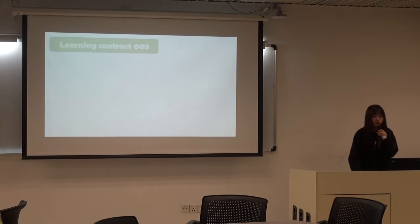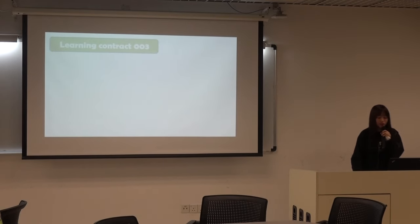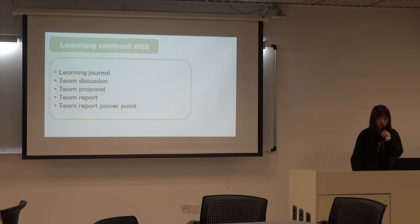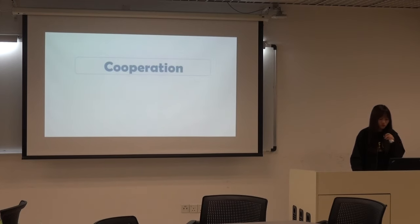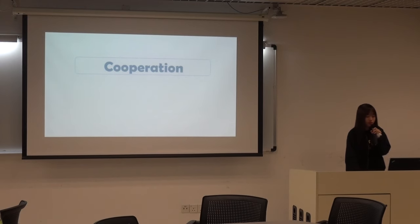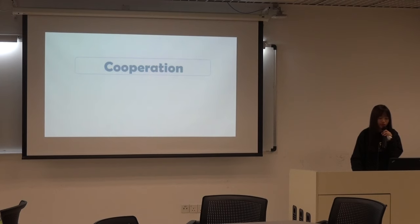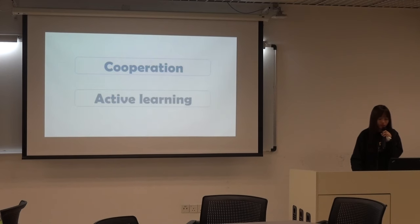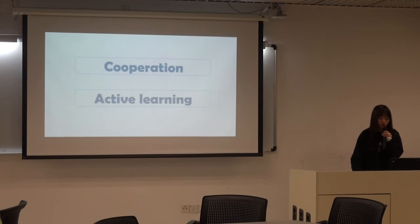In Learning Contract 3, I needed to work with my team members — our team had four people including me. We had to finish a learning journal, team discussion, team proposal, team report, and team PowerPoint. Our final topic was what is the impact of the internet online. I was the secretary of the team. I learned how to cooperate with others through doing these assignments, and doing things by myself helped me become more active in my learning.